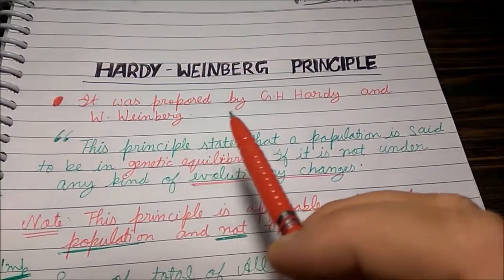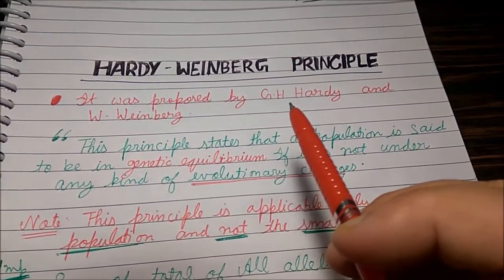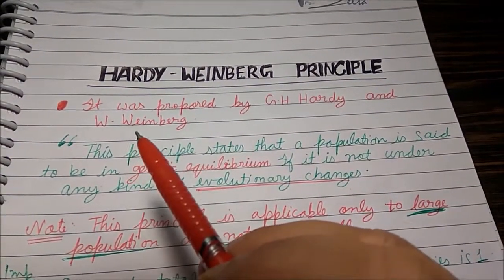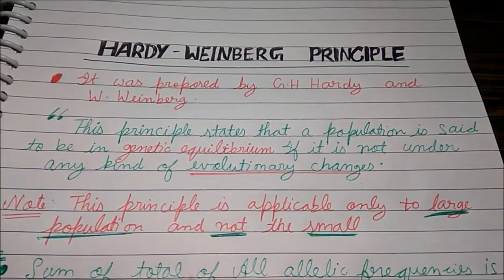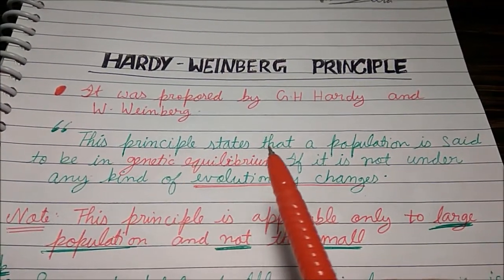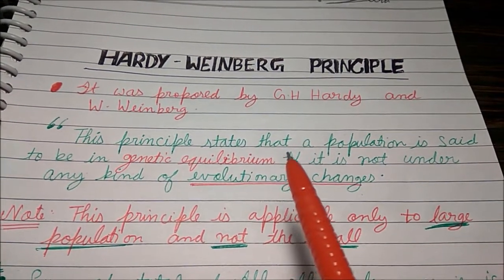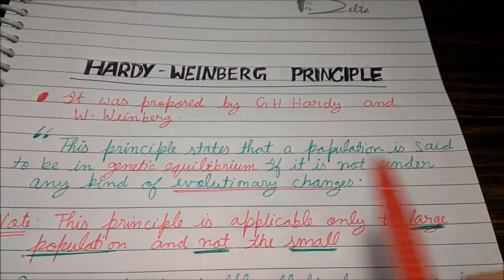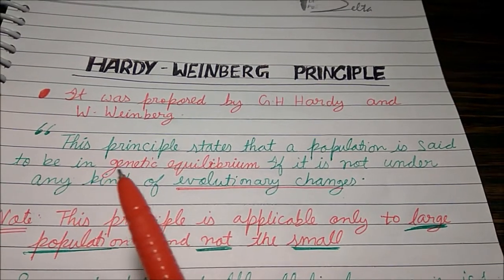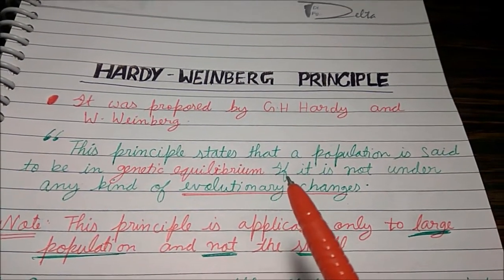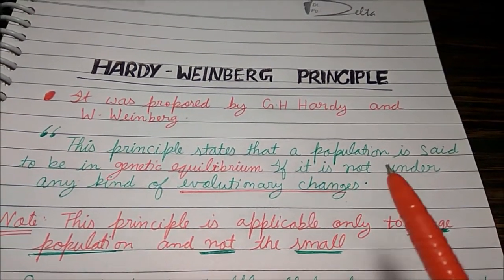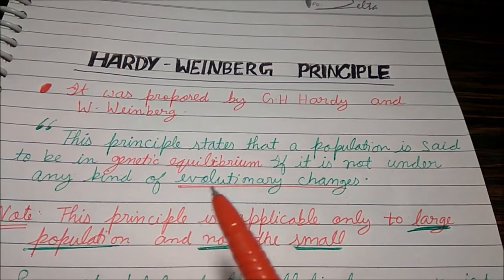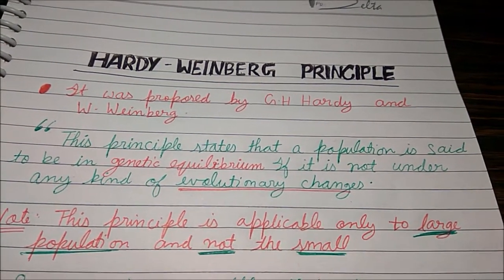It was proposed by G.H. Hardy and W. Weinberg. This principle states that a population is said to be in genetic equilibrium if it is not under any kind of evolutionary change.